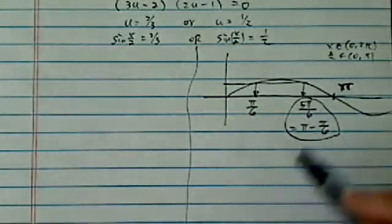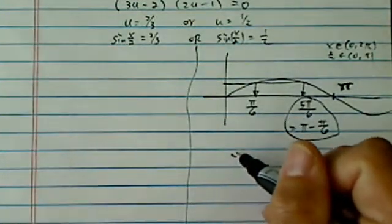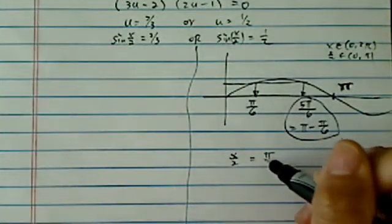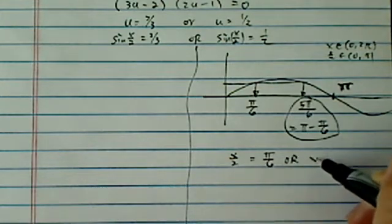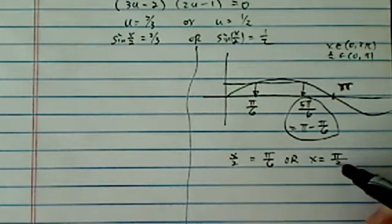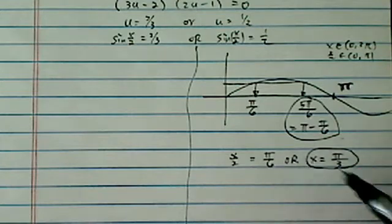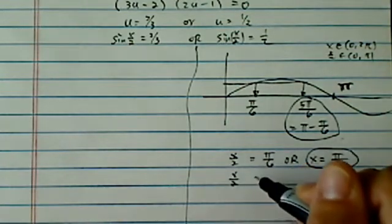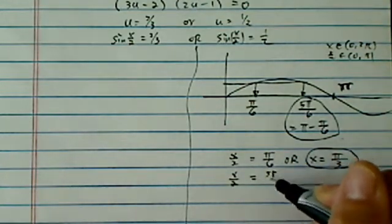So you have two solutions for this half. We have x over 2 equal to π over 6, or x is equal to π over 3. You can just multiply by 2. Or x over 2 is equal to 5π over 6.